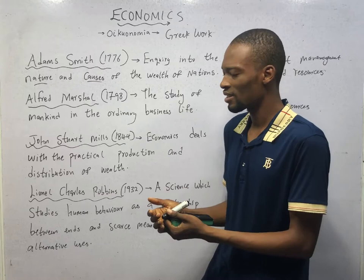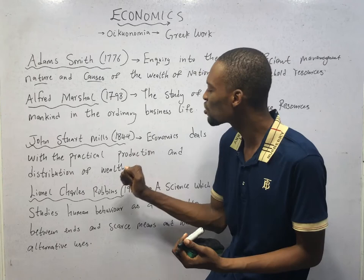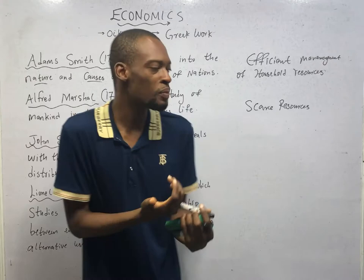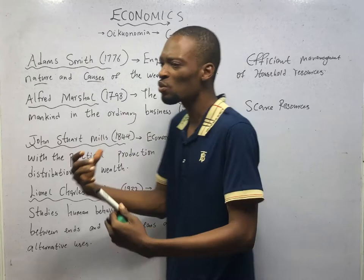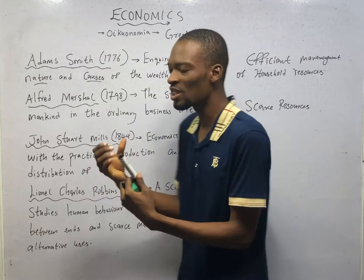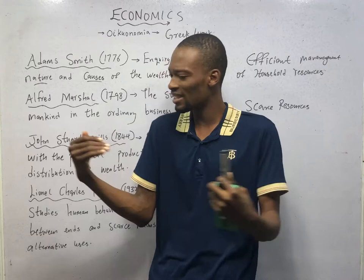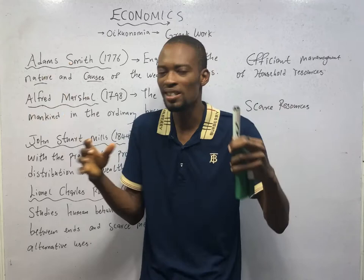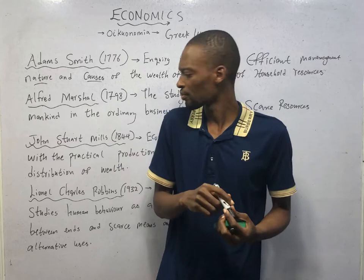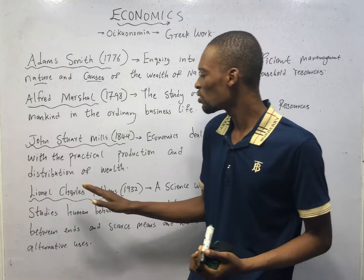John Stuart Mill in 1844 defined economics, stating that economics deals with the practical production and distribution of wealth. According to Mill, economics deals with how we produce wealth and how we ensure that wealth is not concentrated in one person, one firm, or just government, but is distributed among many persons so that they are able to live well.